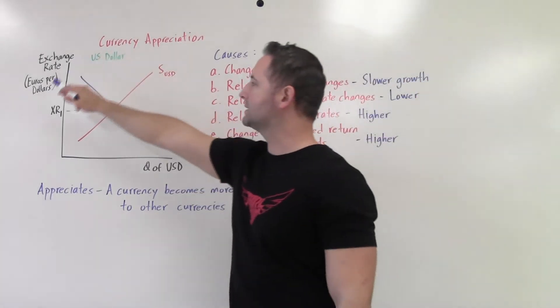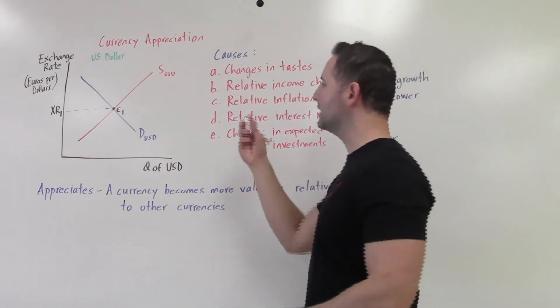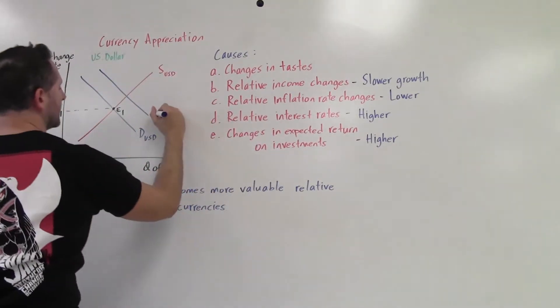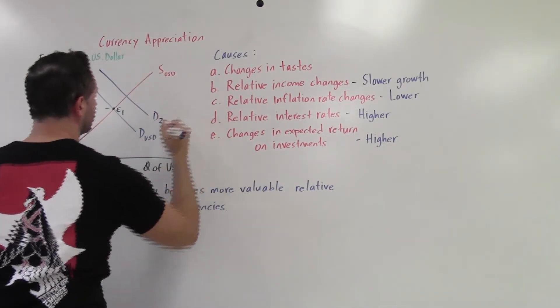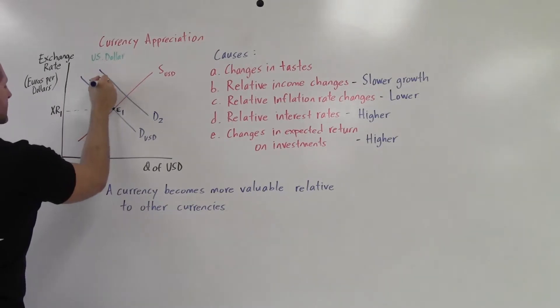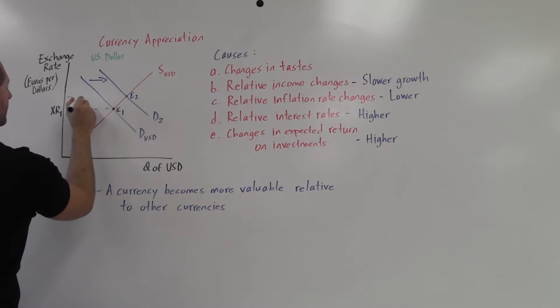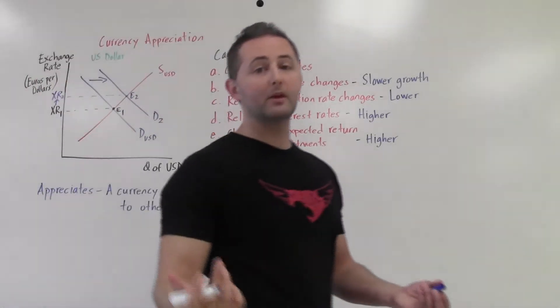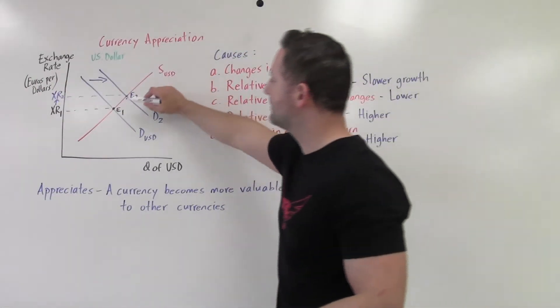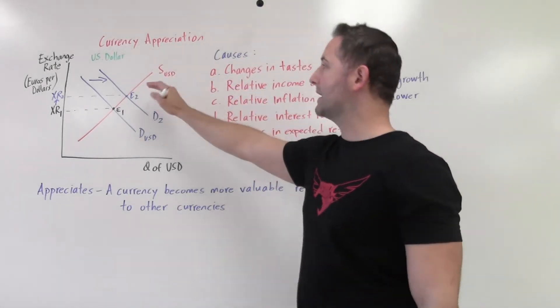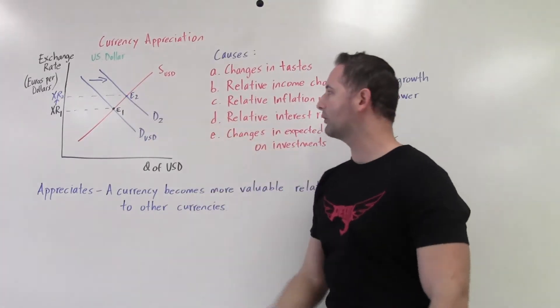So then that would cause it to cost more euros per dollar. We're going to display this the most common way, and that's by an increase in the demand for that currency. So in this case, it is the U.S. dollar is our example. So we have our new point of equilibrium, and that is going to give us a new exchange rate that we can see is clearly higher than the original exchange rate. So what's happening is that now it will cost more euros to buy one single dollar. So that's what it looks like, a shift right of the demand curve.